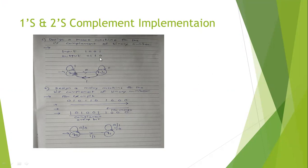We have to form the 1s complement of a binary number using Moore machine. In Moore machine, the output is inside the state and the input is outside. Here you can see my input is one. So for state q0, if input is one, output is zero — that output zero is mentioned inside the state.